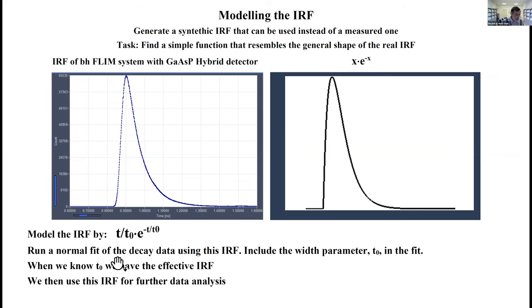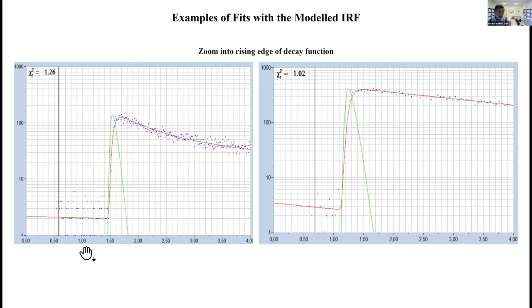The recipe is now we run a normal fit of our decay data using this IRF, but we include the parameter t0 in the fit. What we then get is a parameter t0 which gives the optimal fit for our selected model function. When we know t0, we have our instrument response function. We have a mathematical expression of it, and we can use this IRF for further data analysis. This works surprisingly well.